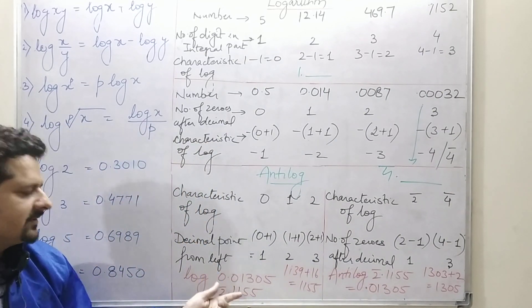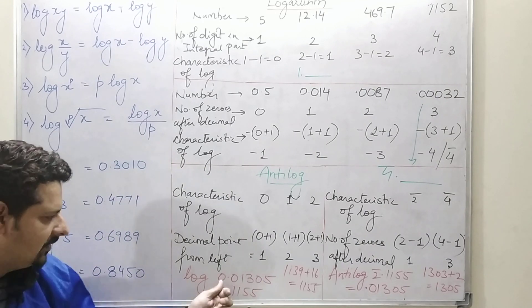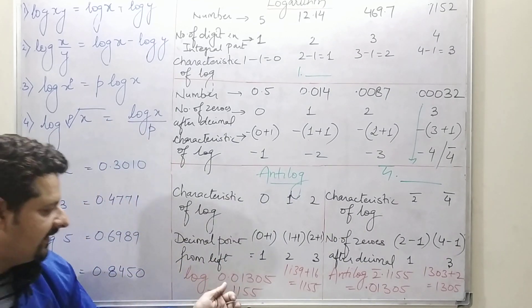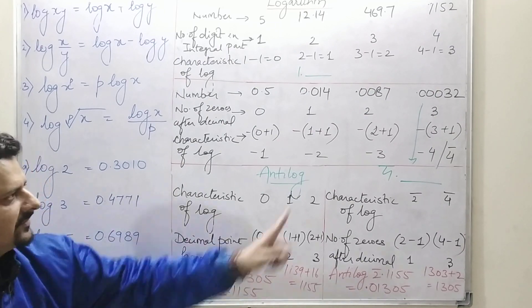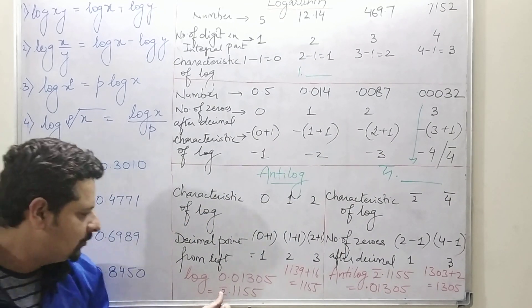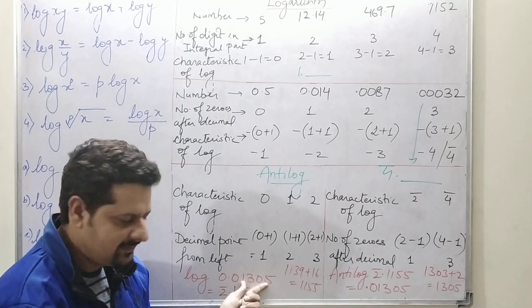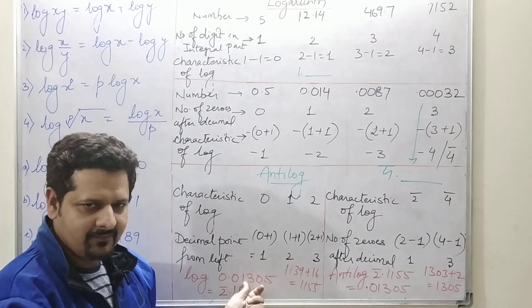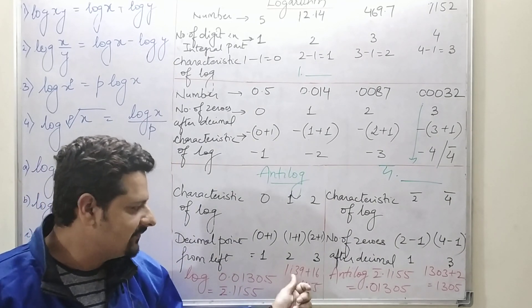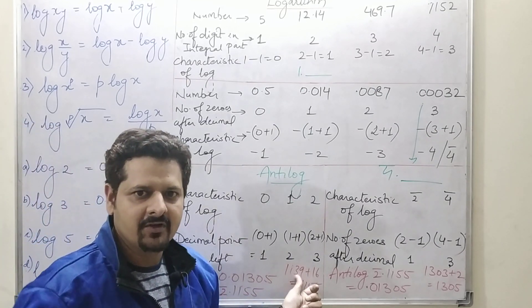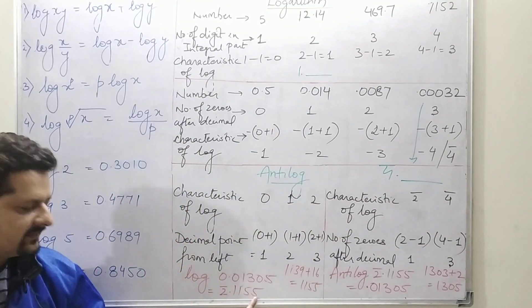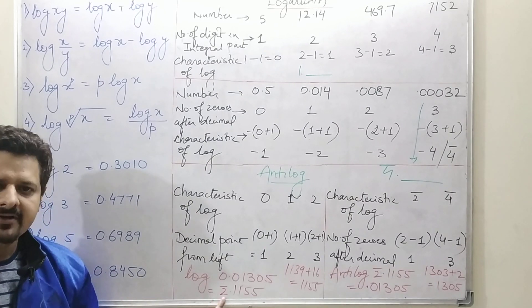Let me work an example: calculate log(0.01305). First, decide the characteristic — after the decimal there is one zero, so using the formula −(1 + 1) = −2, the characteristic is 2̄. Then look up the mantissa from the log table: find row 13, column 0, which gives 1139, then add the mean difference for digit 5 from the mean difference column, which gives 16. Adding: 1139 + 16 = 1155. So log(0.01305) = 2̄.1155.